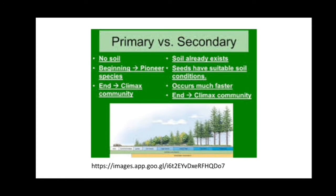Primary succession and secondary succession are the two examples of ecological succession. Primary succession starts from a bare area or barren land with no soil, beginning with pioneer species. Secondary succession occurs where soil already exists, so seeds have suitable soil conditions — it occurs much faster and ends in a climax community.